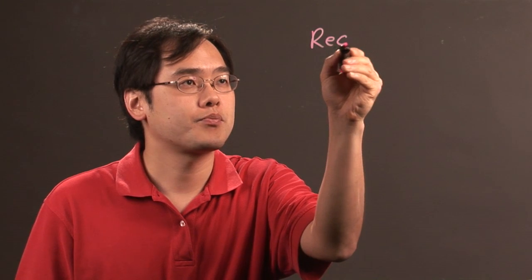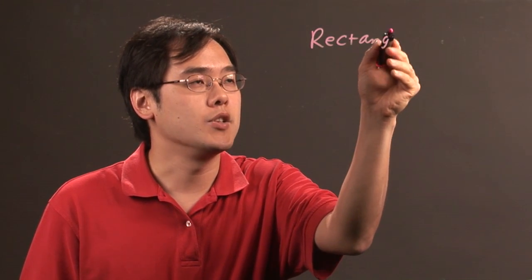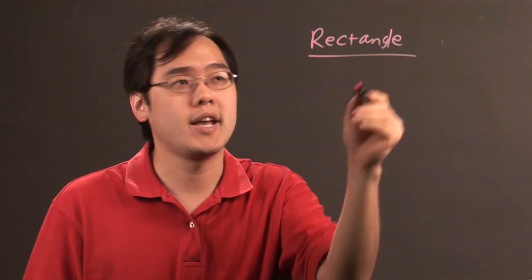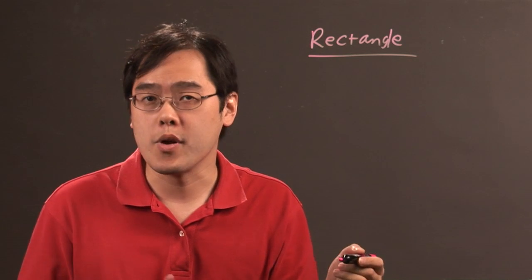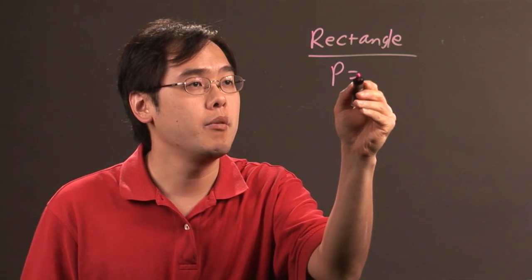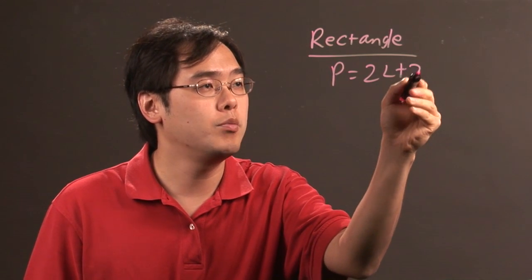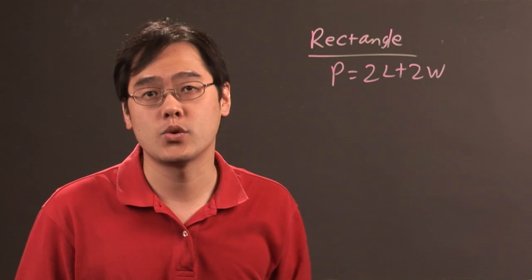The most common shape that is often used in algebra is that of the rectangle. Now rectangle has a couple of very popular formulas. The perimeter, which is 2L plus 2W, that means twice the length plus twice the width.